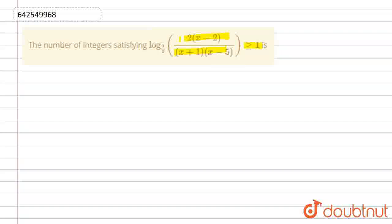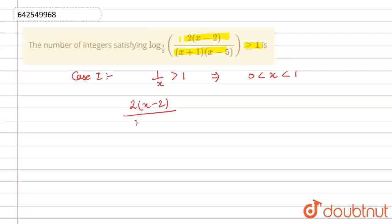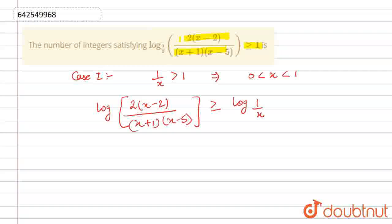In this condition, we will get two cases. The first case is when 1/x is greater than 1, which means that x lies between 0 to 1. In this case, we will see that this equation will be rewritten as: log(x+1) minus log(5) is greater than or equal to log(1/x). If we cancel the log on both sides, what we get is 2x minus 2 times (1/(x+1)) times (x minus 5) is greater than or equal to 1/x.